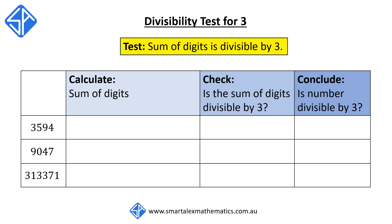For example, 3594. First, we're going to calculate the sum of the digits. 3 plus 5 plus 9 plus 4 is equal to 21. Then, we need to check if the sum of these digits, 21, is divisible by 3.